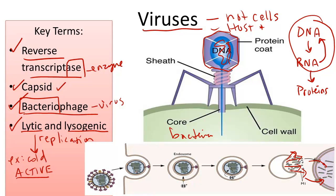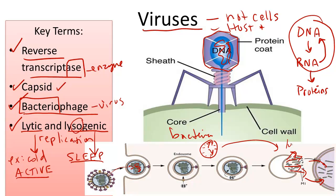The lysogenic cycle is a bit different. Think of 'lyso' and think sleep — I like to think of the lysogenic cycle as a sleep mode. In this stage, the virus enters the nucleus of a cell and its DNA becomes a permanent part of the host chromosome. The genes might stay inactive for maybe months or years. But eventually, the virus may get replicated by the host's chromosome, and in that case it would then enter the lytic cycle.